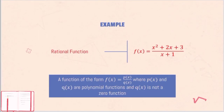This is an example of a rational function: f(x) = x squared plus 2x plus 3 all over x plus 1. As you can see, the same as a rational equation, a rational function also has an equal sign. However, you should take note that a rational function has f(x), g(x), h(x), or any other function notation, or it could also be replaced by y.